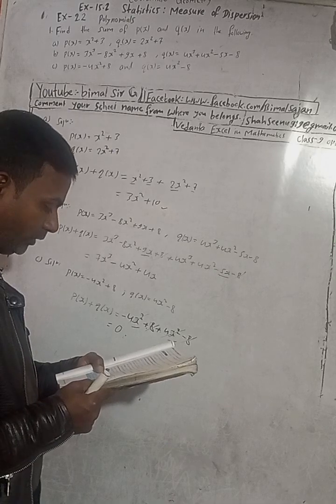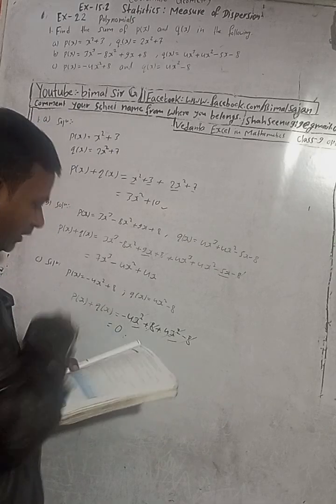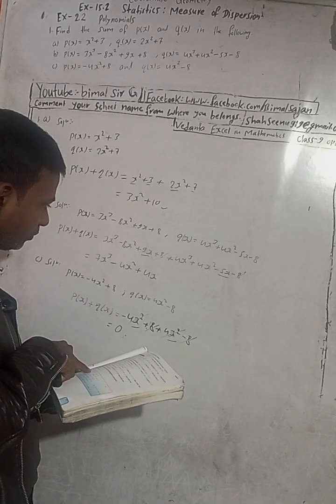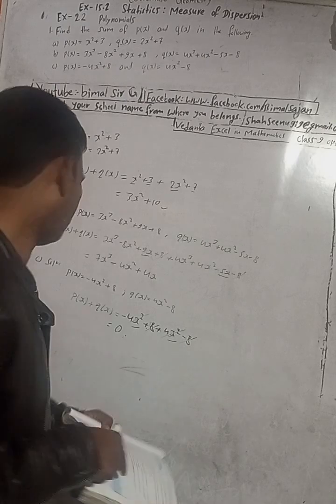Let me check the book. This is the first one: 3x square plus 10, correct. 7x cube minus 4x square plus 4x square, this is zero, last five.